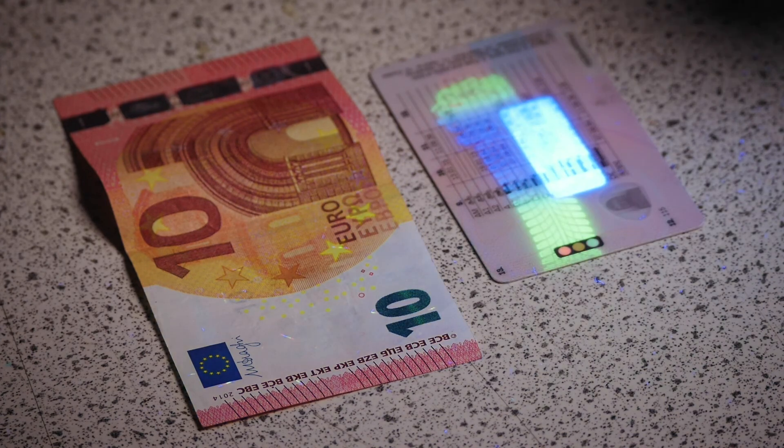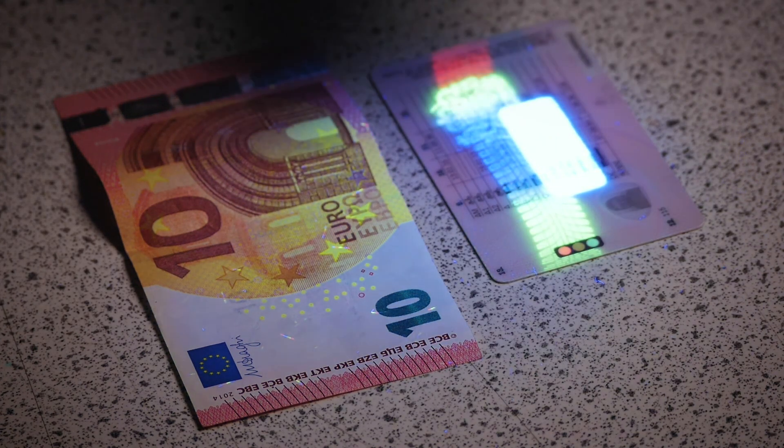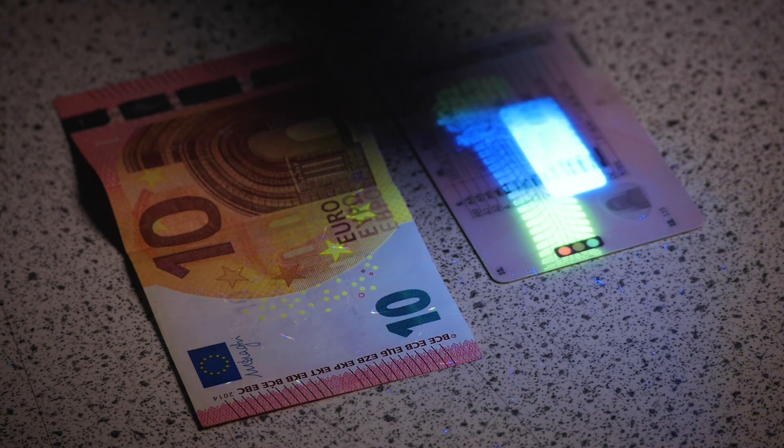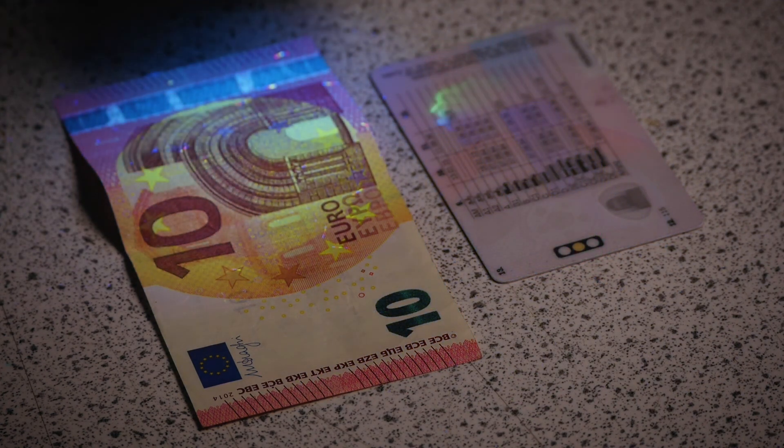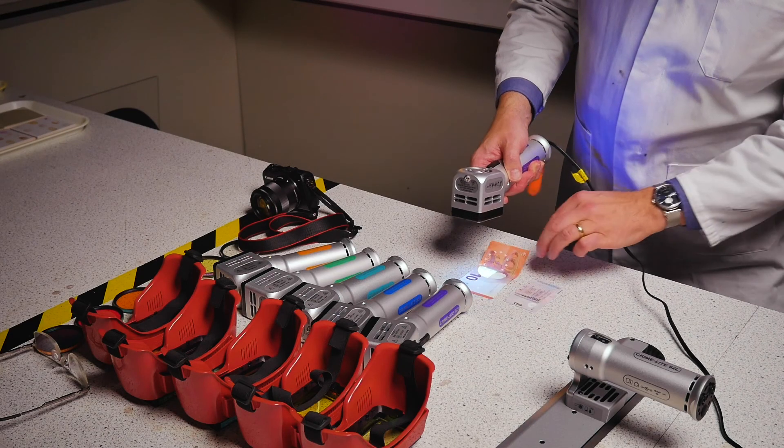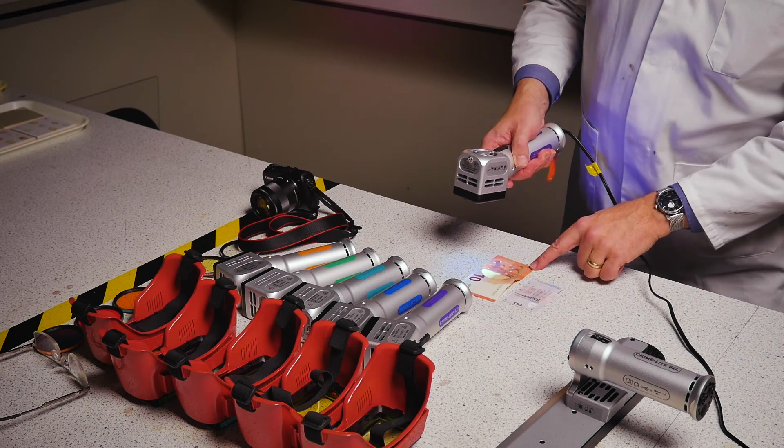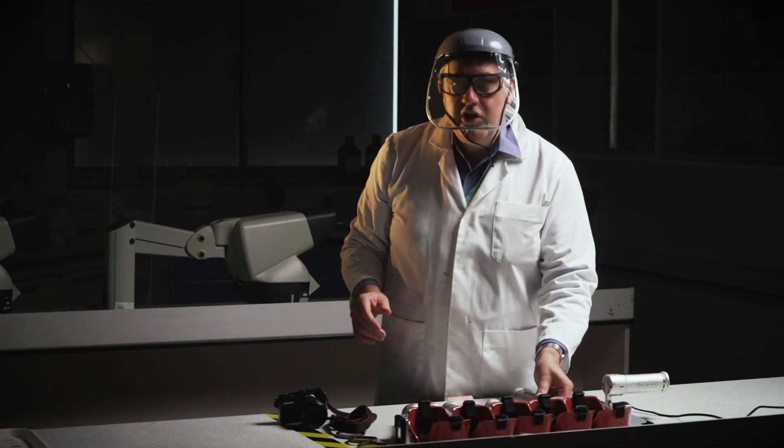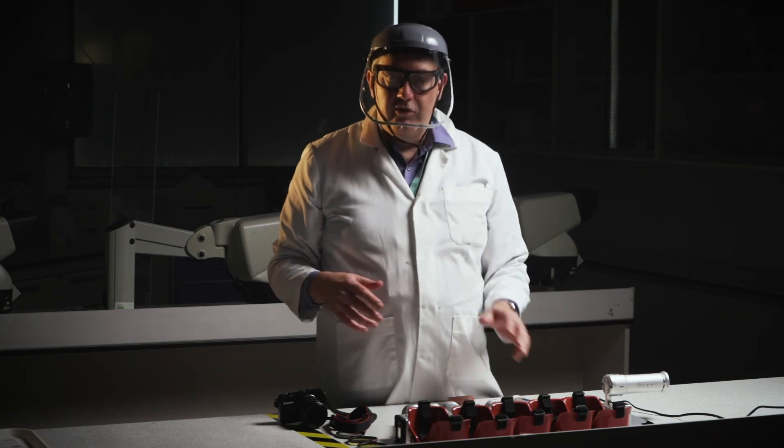And we can see that we have some quite bright fluorescence from the security features in the back of the driving license, and also some of the things on the €10 note. And we can see there are slightly different things on the other side. So that's a very quick practical demonstration of how the light sources work.